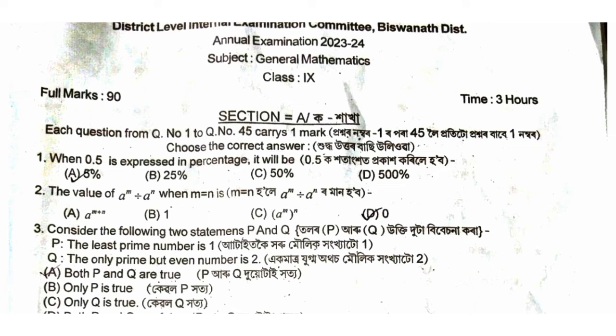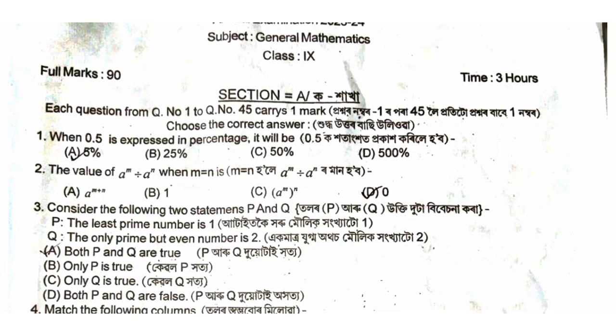When 0.5 is expressed as a percentage, you multiply by 100, so 0.5 expressed in percentage is equal to 50%.